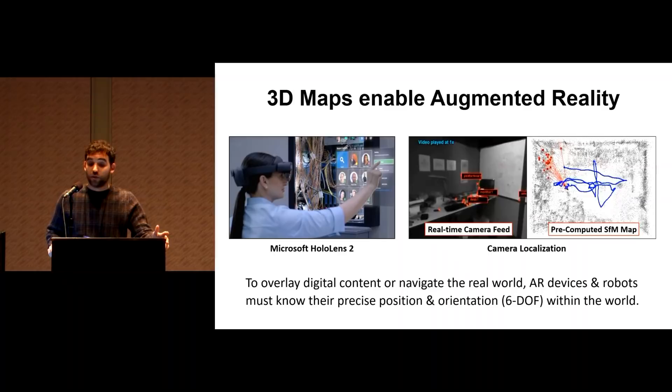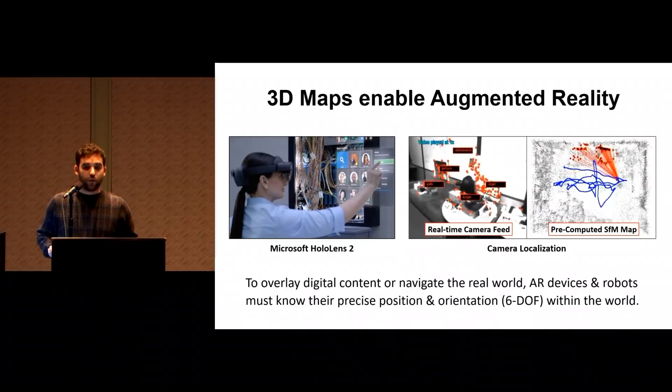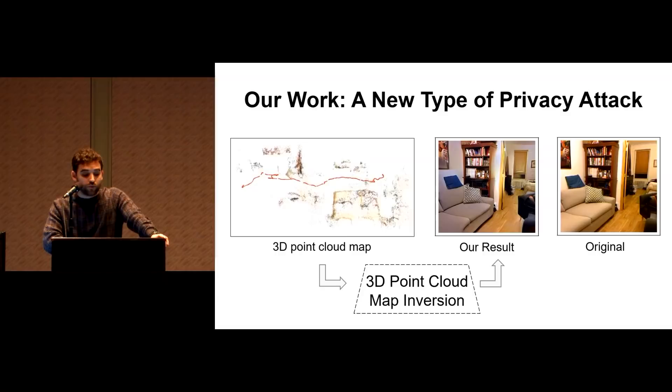In AR, SFM maps are pre-computed to perform fast camera localization, which is necessary to overlay digital content into the real world. And the focus of this presentation is to examine the privacy implications of this. Until now, the major privacy concerns with respect to AR devices has been the potential leakage of sensitive information from one of the many onboard sensors. In this presentation, we highlight a new kind of privacy attack. Specifically, we show for the first time that sparse SFM point clouds can be inverted to reconstruct a detailed and recognizable, or detailed recognizable images of the scene.